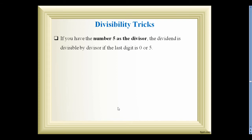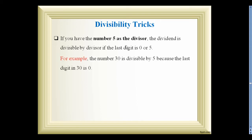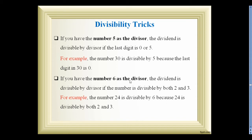If a number has 5 as a divisor, the dividend is divisible by the divisor if the last digit ends with 0 or 5. For example, 30 is divisible by 5 because the last digit is 0. If a number has 6 as a divisor, the dividend is divisible if the number is divisible by both 2 and 3. For example, 24 is divisible by 6 because it is divisible by both 2 and 3.